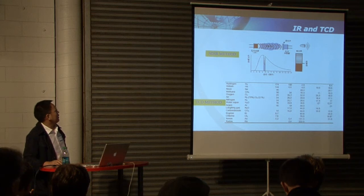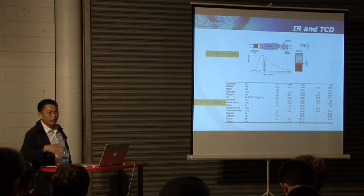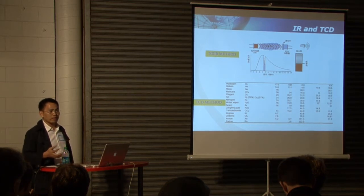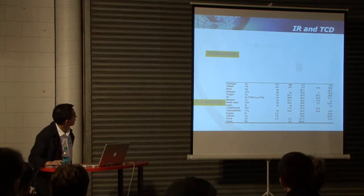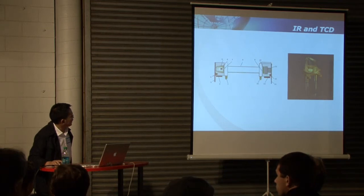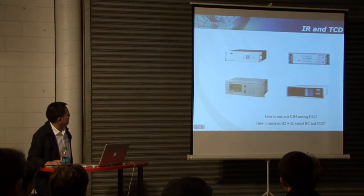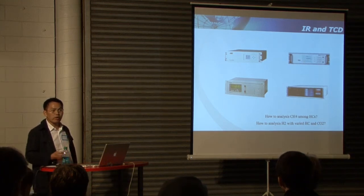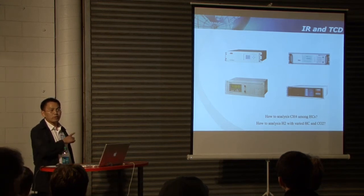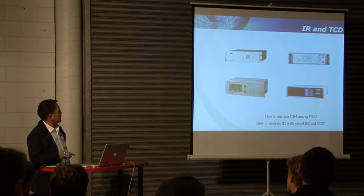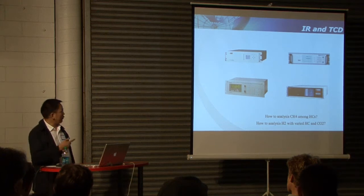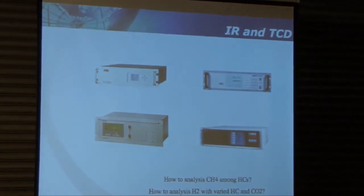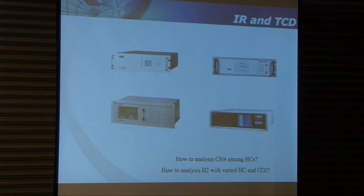So the second way to monitor the gas is using infrared and TCD separately. Generally, now in the world, there are some companies who do this kind of business, such as ABB and Siemens. They do this kind of analyzer. ABB, Siemens, Fuji, and others provide this kind of gas analyzer. But generally, they are used for an analyzer of CO and CO2, but no CH4. I'll tell you the reason in the next chapter. Because they just can analyze CO and CO2 and oxygen. So in fact, for gasifier or for pyrolysis, CH4 is very important. So they can only analyze several kinds of gas, not a total solution.